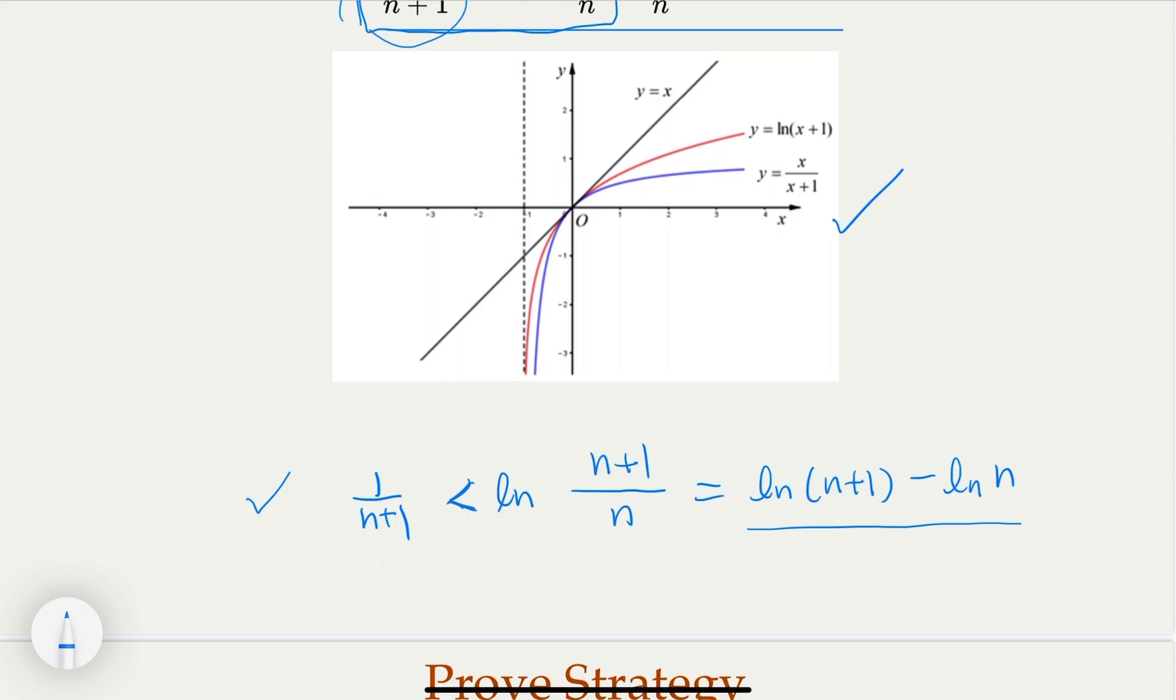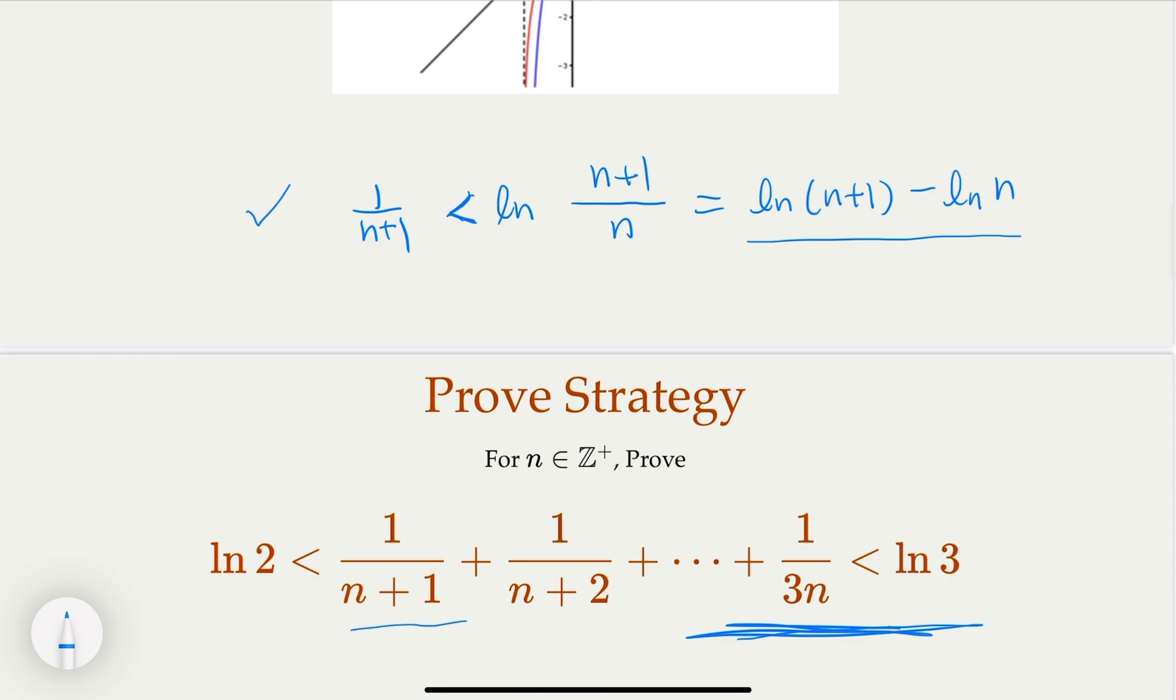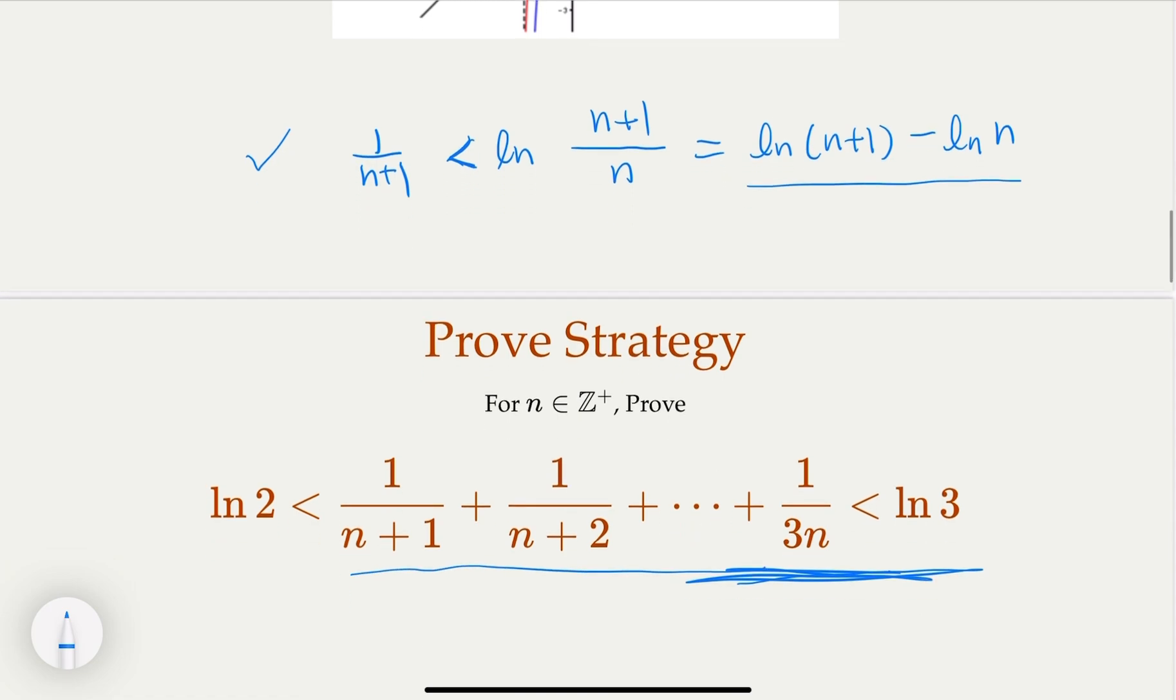Now we have in the S n, we have many, many terms. How many terms we have? A total from n plus 1 to n plus 2n. So we have total 2n terms. And we're going to apply this inequality for each term. So that's the proof strategy. Let's write it out.